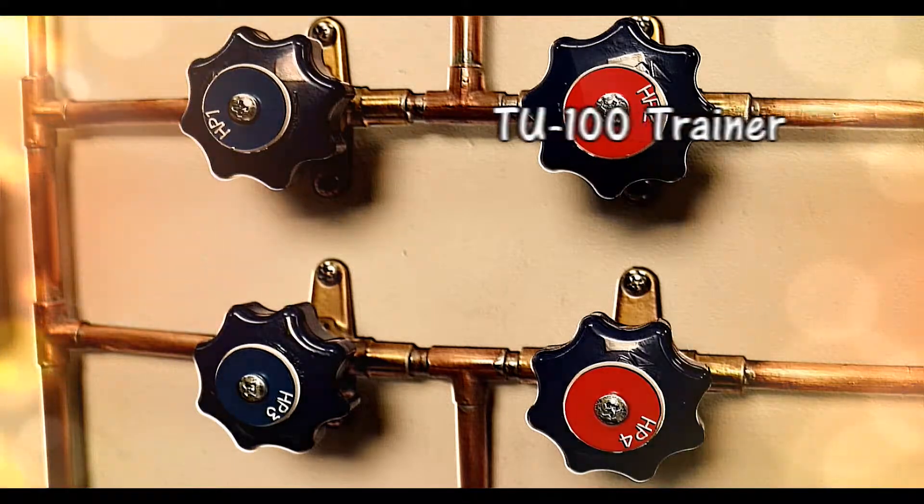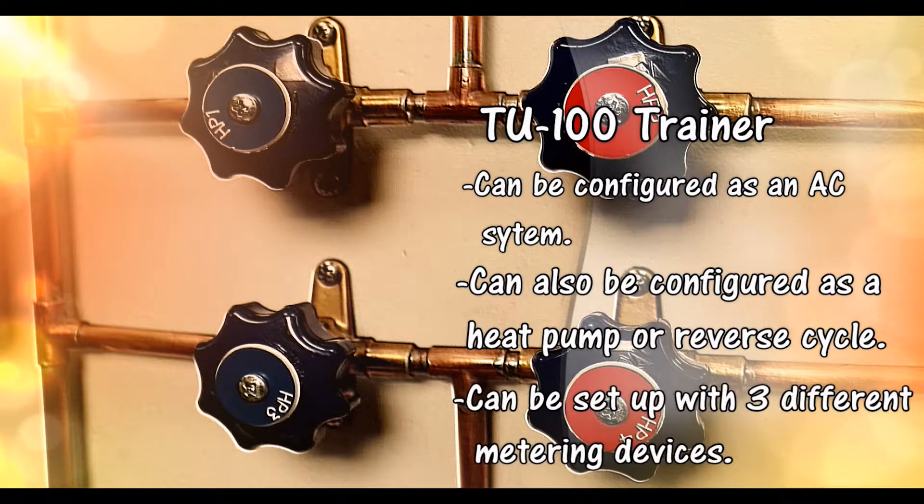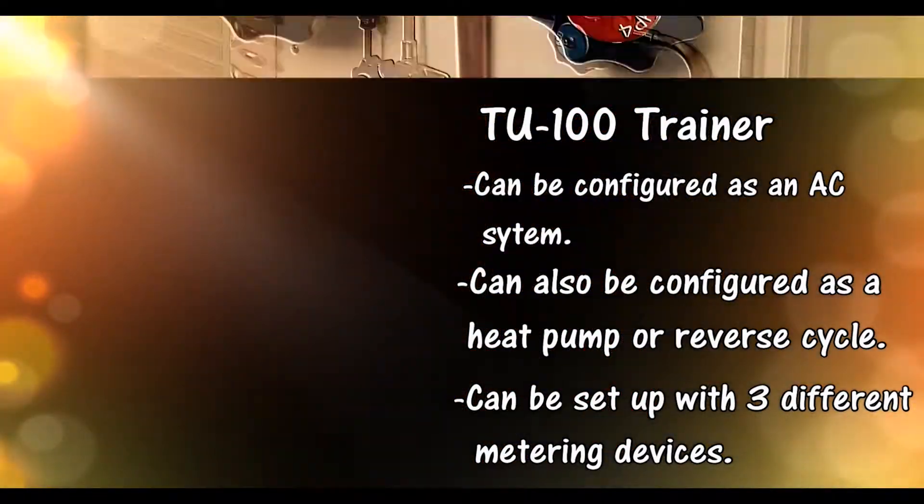When HP1 and HP4 are open, the upper coil functions as the evaporator and can be operated with one of three different metering devices. When HP2 and HP3 are open, the upper coil functions as the condenser.